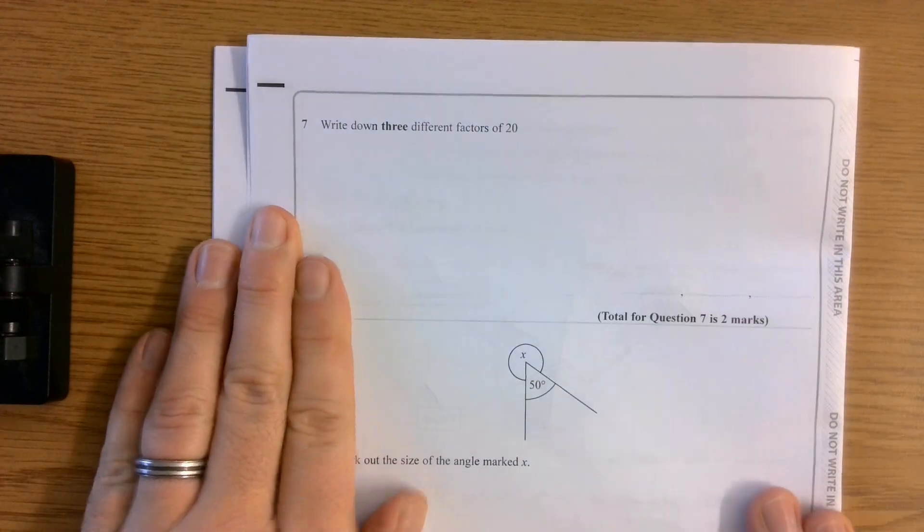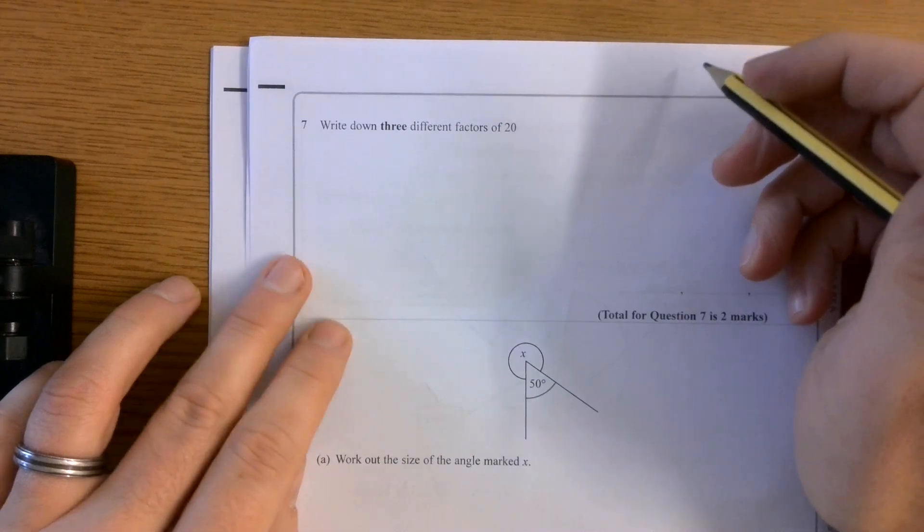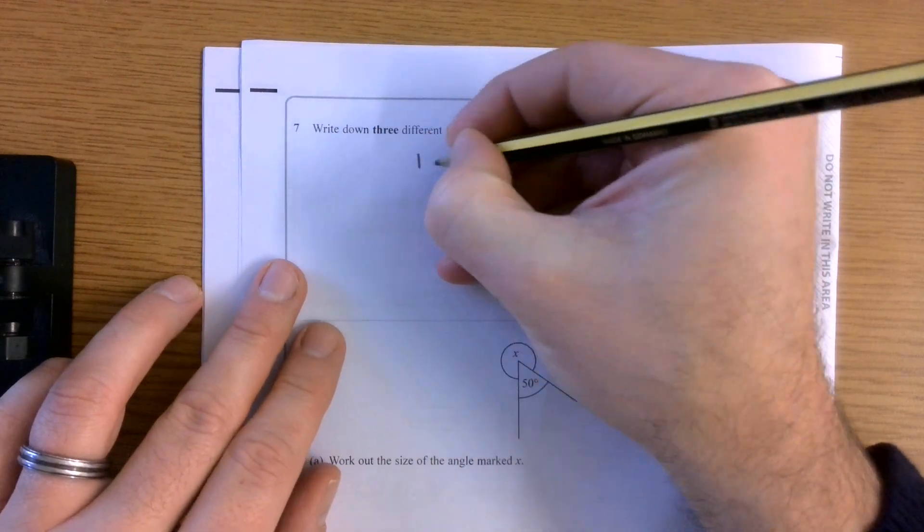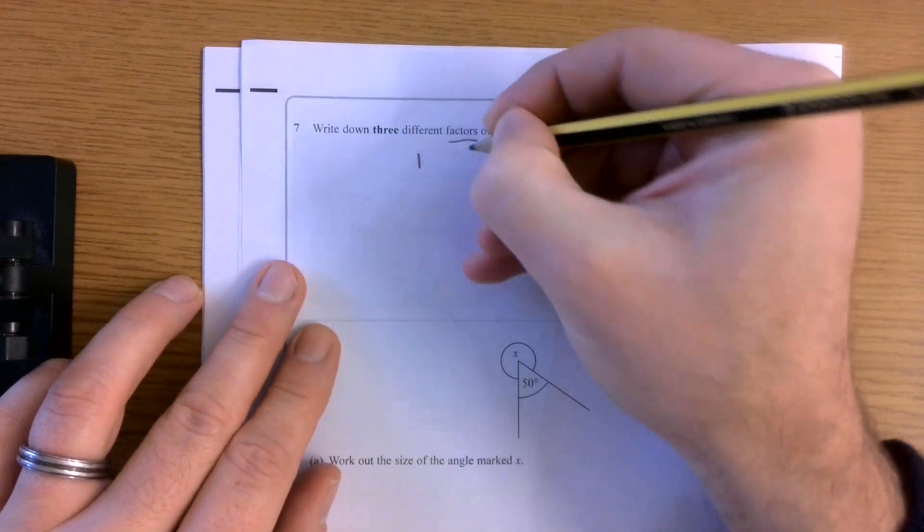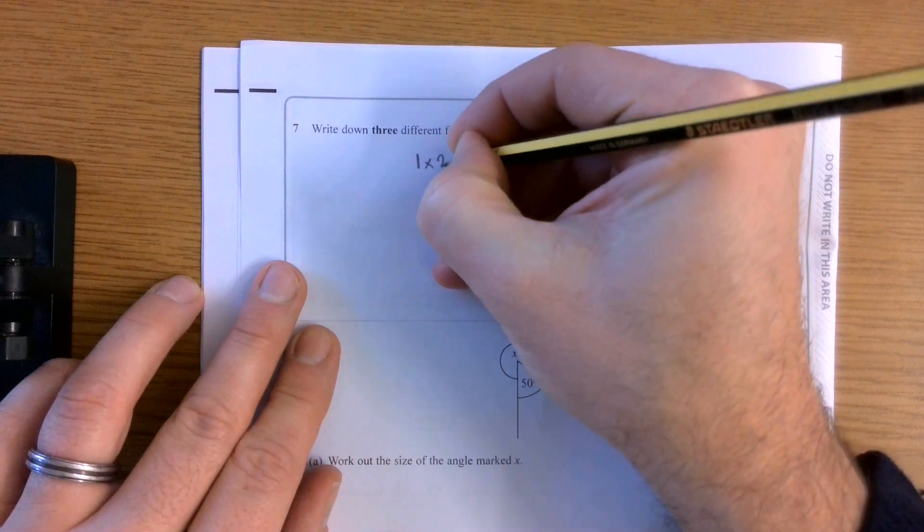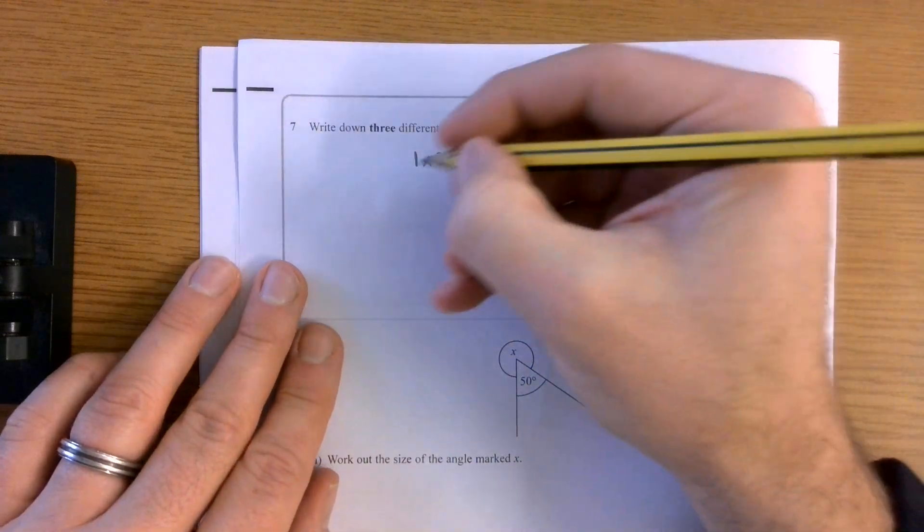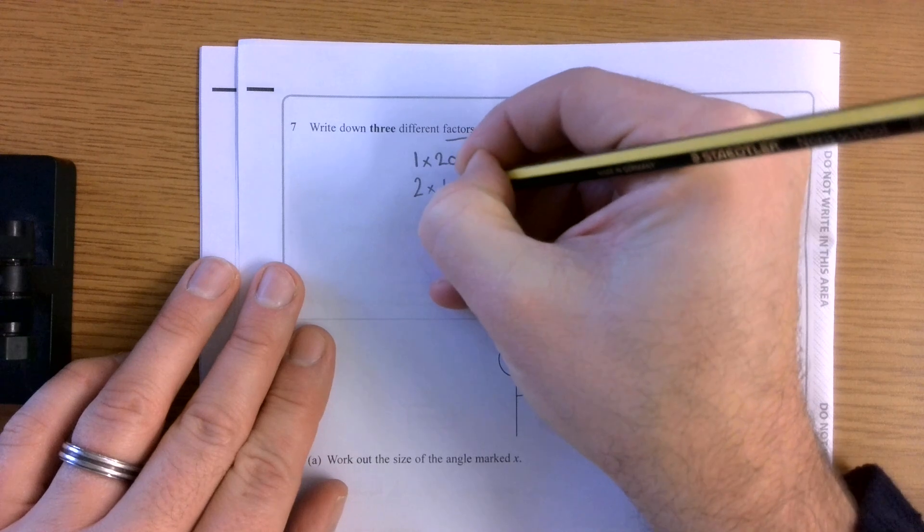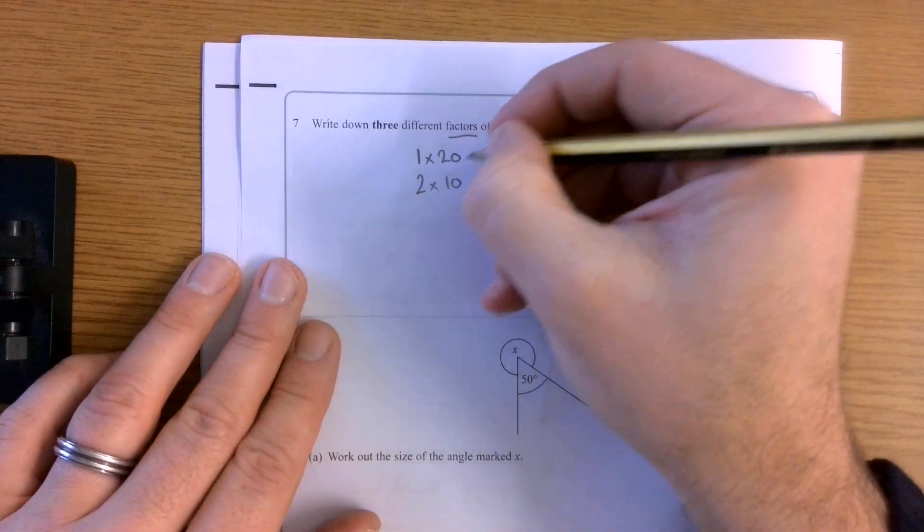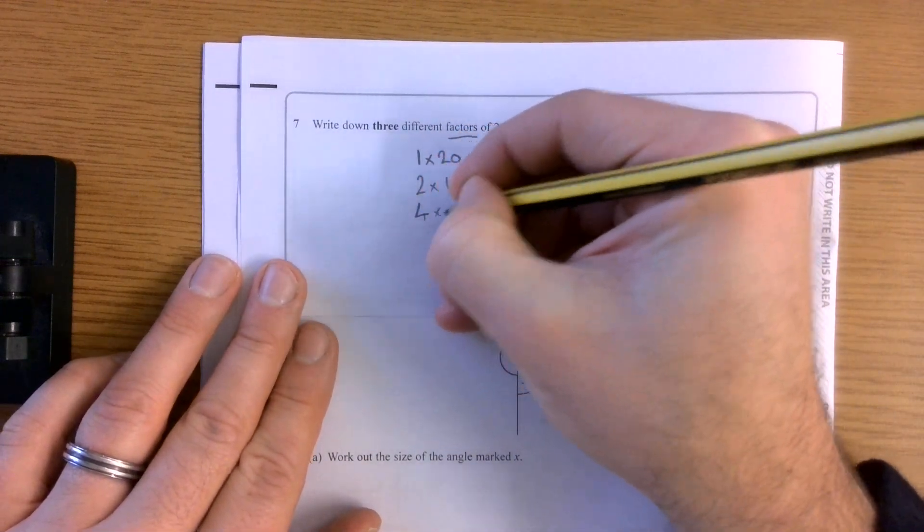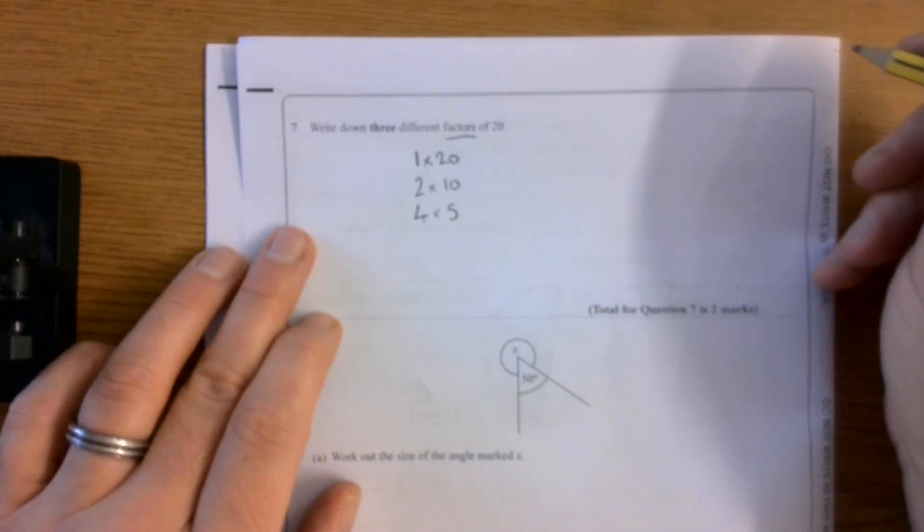So now we're on to question 7. This is three different factors of 20. I've got factors - I like factories and they make things. So 1 times 20 would give me 20. 2 times 10 gives me 20, so they're both factors of 20. And 4 times 5 gives me 20. So they're all factors of 20.